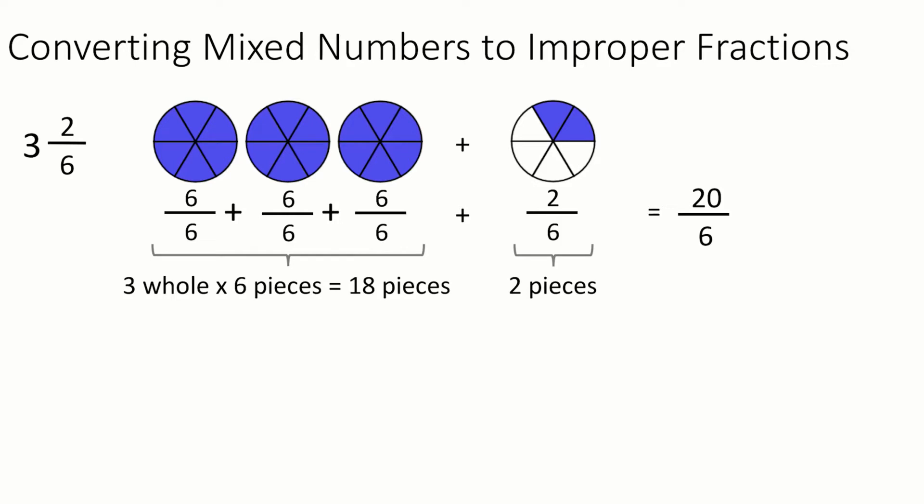So 6 plus 6 is 12, plus 6 more is 18. So those 3 wholes really come down to being 18 pieces. And plus the other 2 pieces we have from the 4th whole gives us a total of 20 pieces.